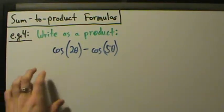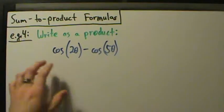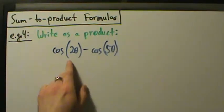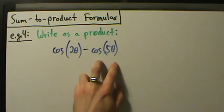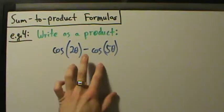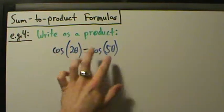Here's example four of sum to product formulas. We have cosine of two theta minus the cosine of five theta, and what we want to do is write this difference as a product.